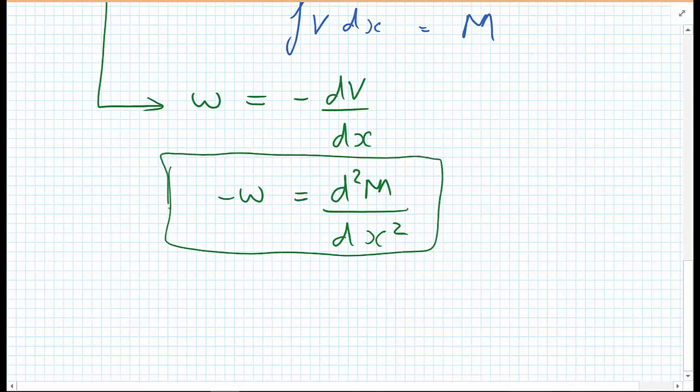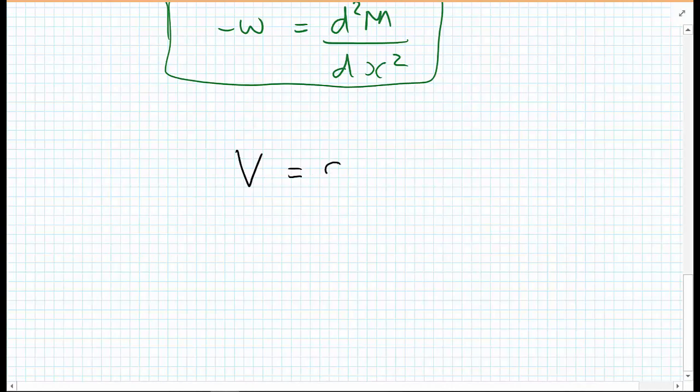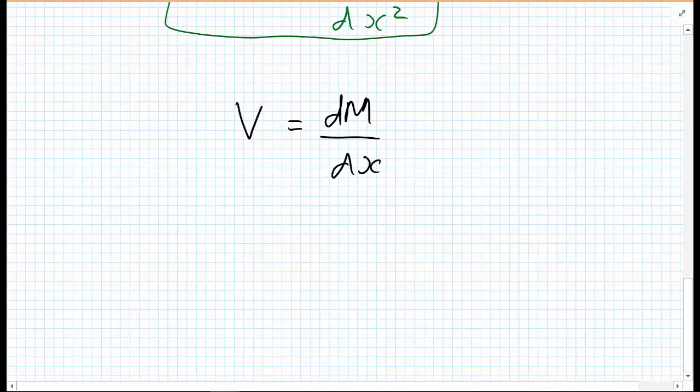Finally, we're going to go back to our relationship between shear force and bending moment, so V equals dM by dx. For mathematics, we know if we take the differential of some function, then we can use that differential to find out whether something is a maxima or a minima by equating that differential to zero.